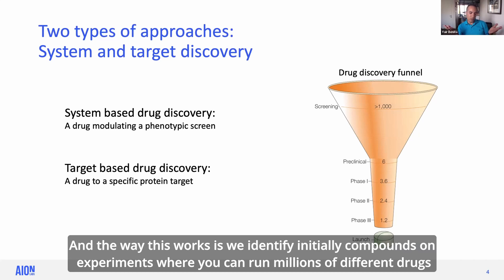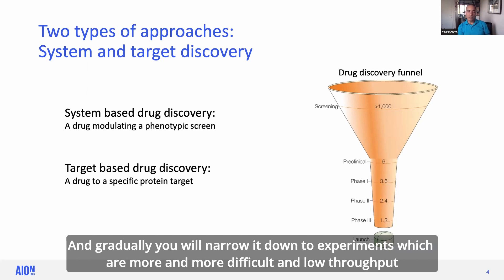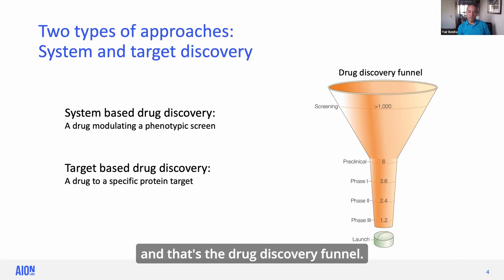The way this works is we identify initially compounds in experiments where you can run millions of different drugs, and gradually you narrow it down to experiments which are more and more difficult and low throughput. And of course, clinical trials are the lowest throughput. And that's the drug discovery funnel.